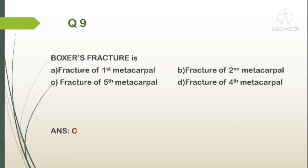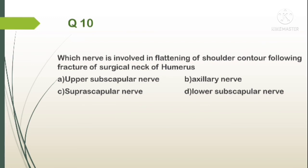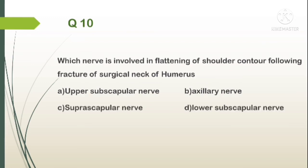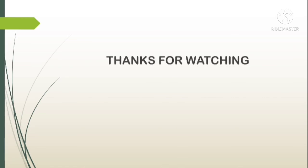Question number 10. Which nerve is involved in flattening of shoulder contour following fracture of the surgical neck of humerus? A. Upper subscapular nerve, B. Axillary nerve, C. Suprascapular nerve, D. Lower subscapular nerve. In surgical neck of humerus fracture, the axillary nerve gets injured, so the answer is B. Axillary nerve. The axillary nerve supplies the deltoid muscle; if injured, the deltoid gets paralyzed and produces flattening of the shoulder contour.